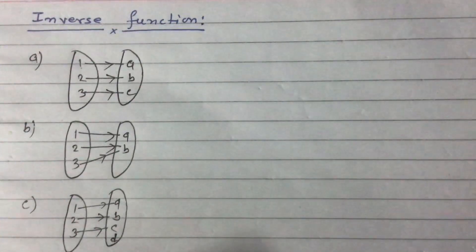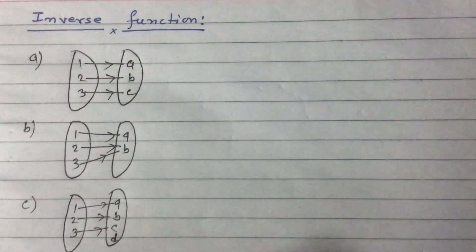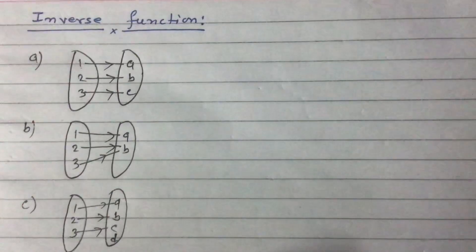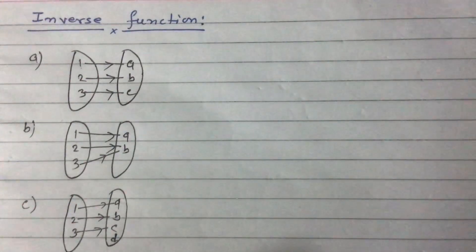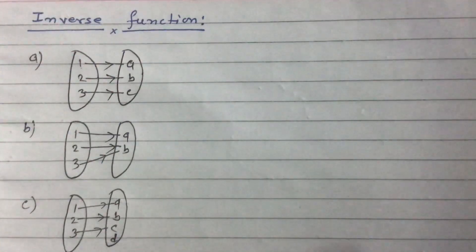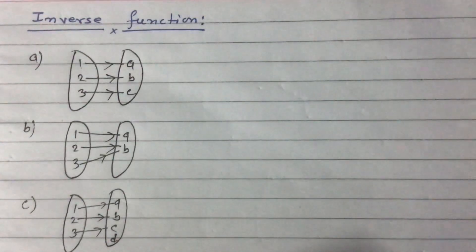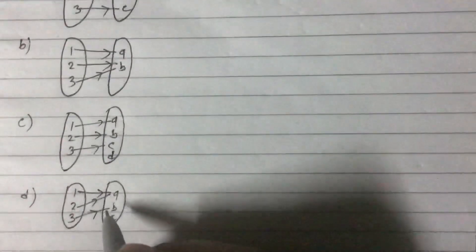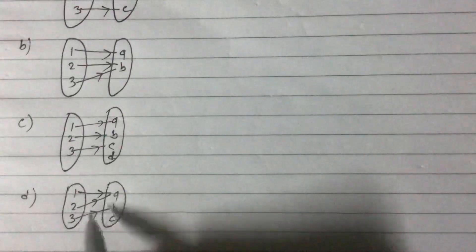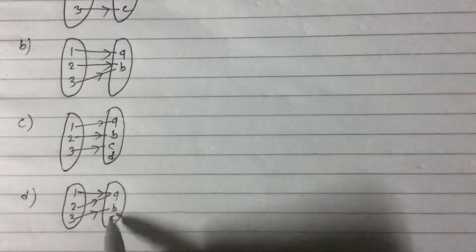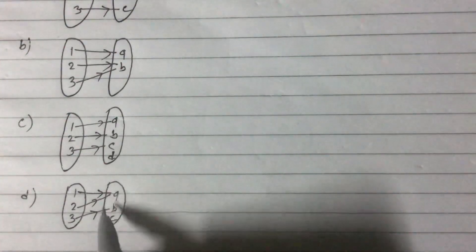The fourth type is like this: we have {1, 2, 3} mapped to {A, B, C}, where 1 maps to A, 2 maps to A, and 3 maps to B. C is an extra element. So this is a many-to-one into function.